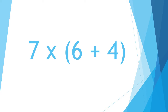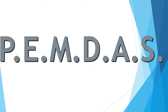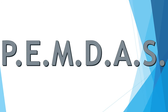Now that you have your answer, let's see if it's the same answer that we came up with. When solving this problem, you have to remember that everything has an order. In math, you must follow the order of operations. The order of operations is like a secret code. The code word is PEMDAS.